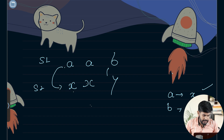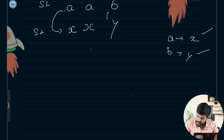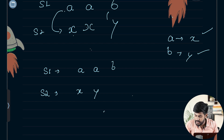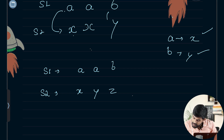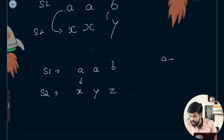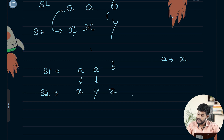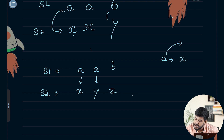Let's take the next example. Say we have S1 as AAB and S2 as XYZ. If we map the value A to X, then we see A again needs to be mapped with something other than X, because A is already mapped with X and now it needs to be mapped with something else. This is invalid.